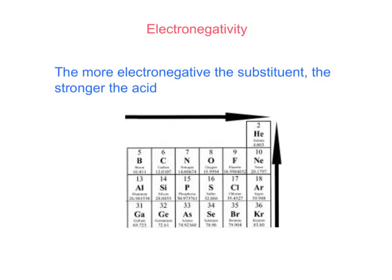First, we'll talk about electronegativity and how it affects relative acidity of a molecule. As you can see here, I have a zoomed-in picture of a periodic table, which is focused on the more electronegative atoms. As you can see from these arrows, the farther right and the higher up on the periodic table you go, the more electronegative the atom is going to be. So fluorine is going to be the most electronegative atom. The more electronegative the substituent, the stronger the acid, because it pulls electron density away, stabilizing the carboxylate ion.